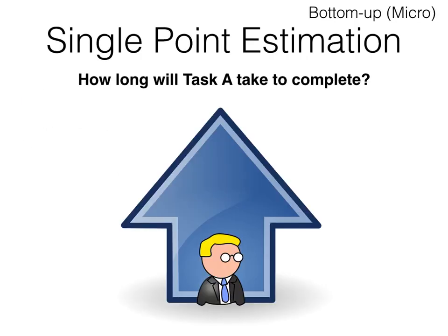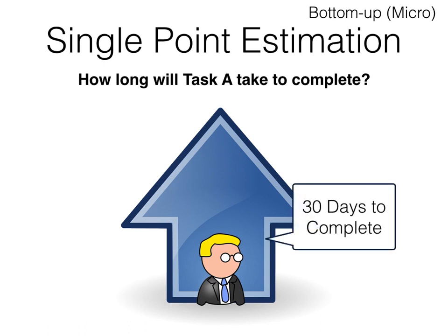A single-point estimate is the easiest estimate to obtain and understand. We simply ask an estimator to provide a value for how long a particular task or activity will take to complete. The problem is the estimator may have other information or may suspect other things based on their expert judgment, such as how long it would take if things don't go well.